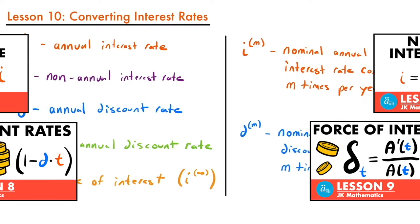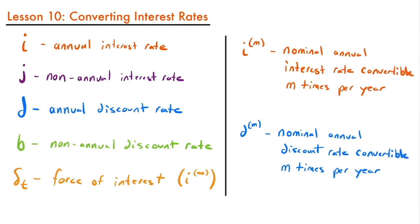Before we move into going over the conversion formulas, I will point out that I haven't really talked about the non-annual discount rate B. This is essentially the same thing as what J is to I — if you have an annual interest rate, you can also have a non-annual interest rate. So if we can have an annual discount rate, we also have a non-annual discount rate, which we label with B. That represents a discount rate that does not occur yearly. The rest of these rates should be familiar.